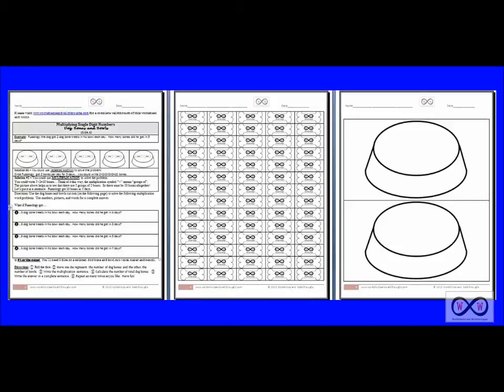We'll be looking at these worksheets. You can go to worksheetsandwalkthroughs.com to print out a copy for yourself. You can see we have the directions page with a few problems. We also have cutouts for the dog bones and dog bowls. Let's get started.